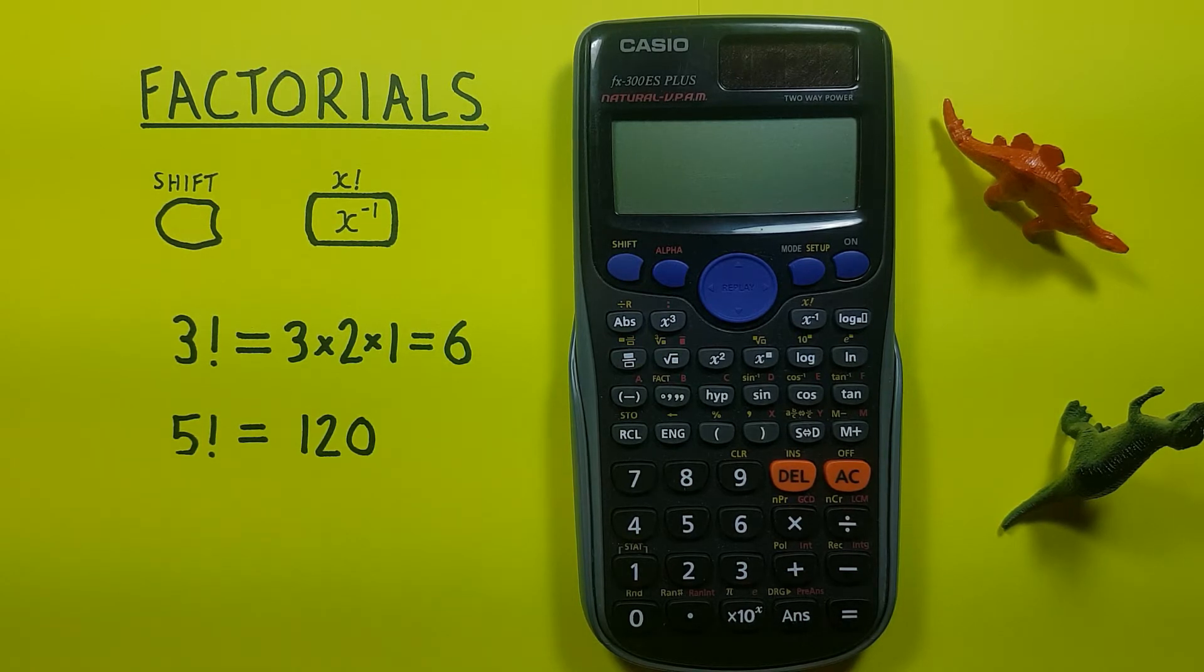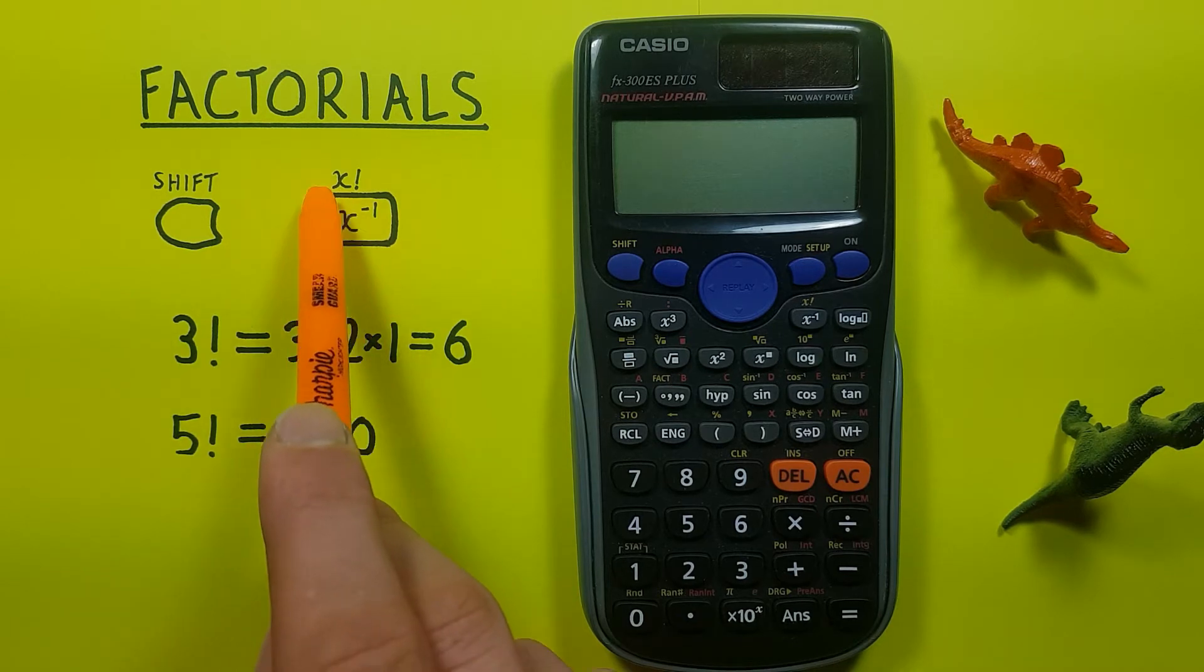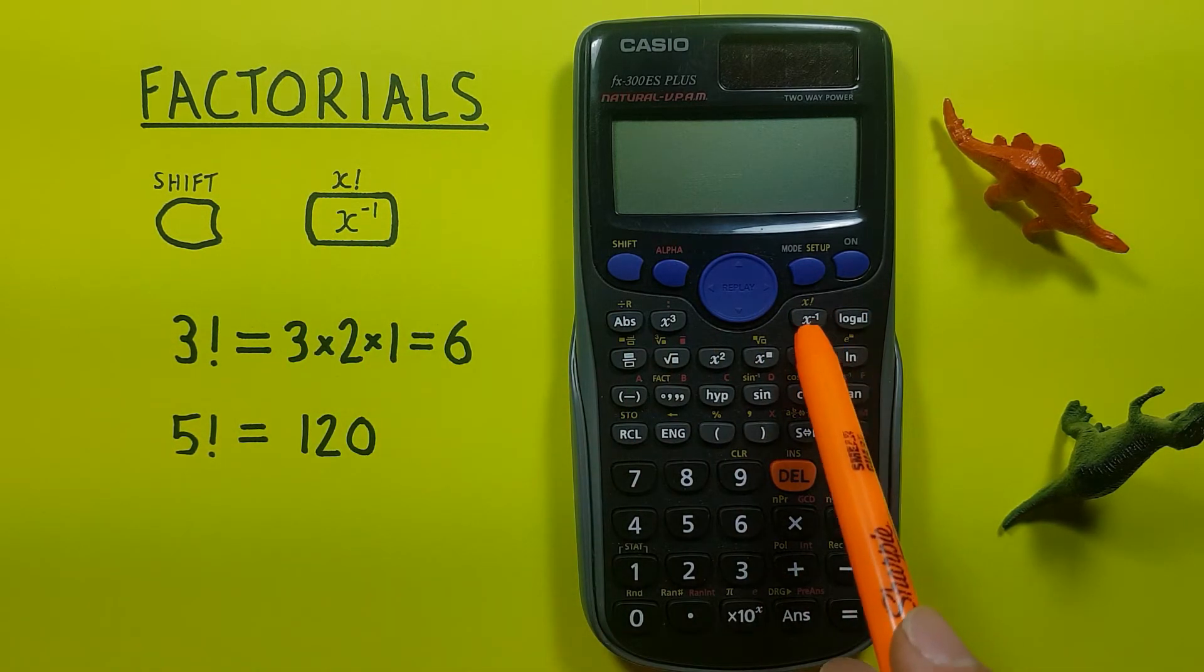To do this we'll need to use the shift key that looks like this located here, as well as the x inverse key with a second function or shift function of x factorial that looks like this located here.